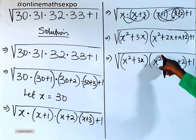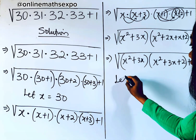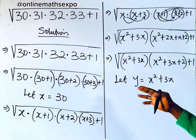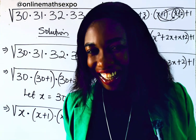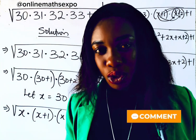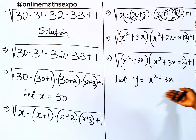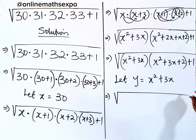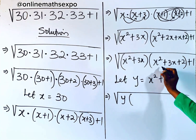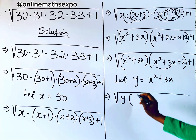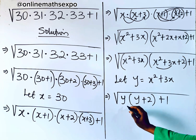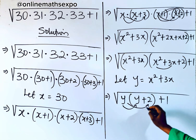We observe that x² + 3x appears in both factors, so let y = x² + 3x. We're doing this to simplify — remember, we are not using a calculator. So continuing, the expression inside the square root becomes y(y + 2) + 1.